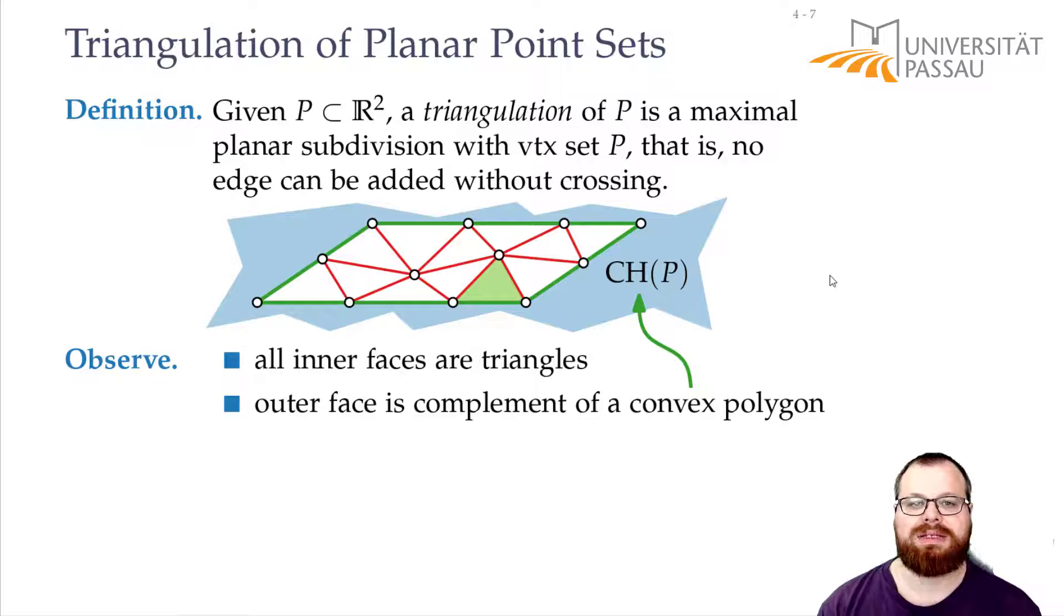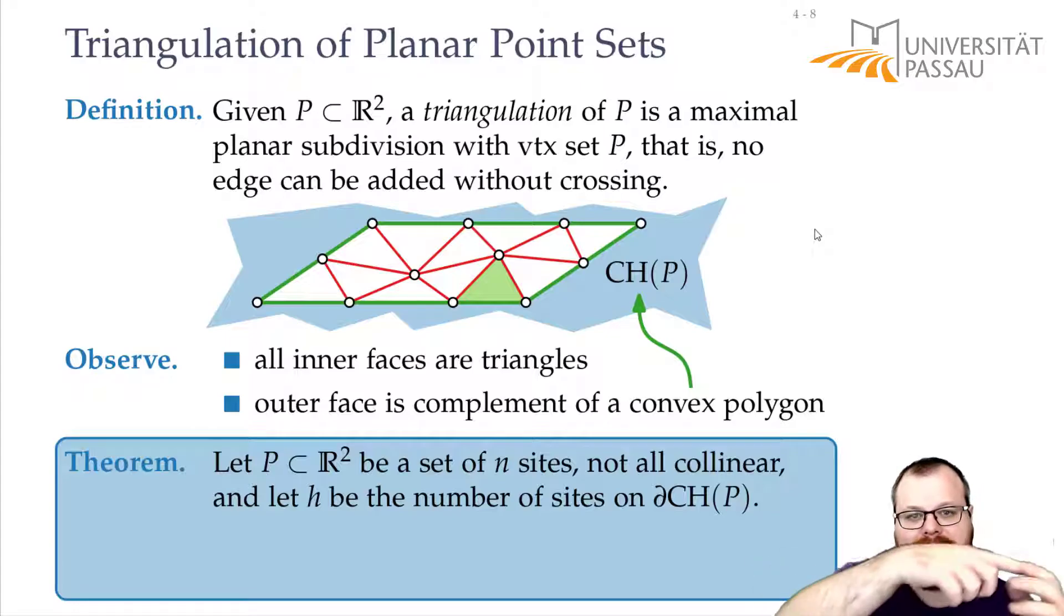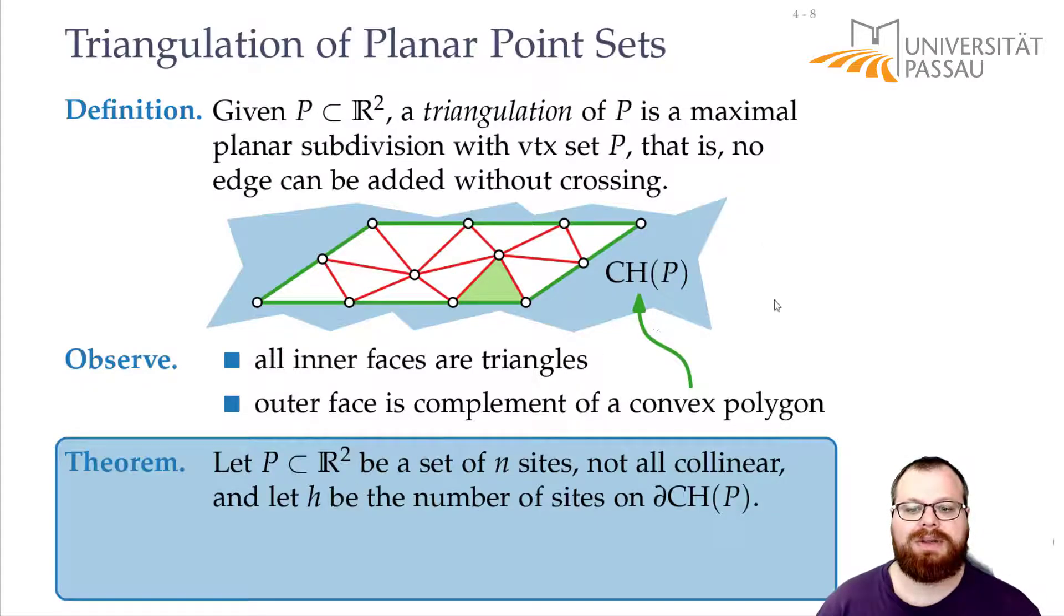So we want to find a triangulation of our point set and this leads us to our first result. Let P be a set of n sites. We call it sites again so that we don't have any confusion between input points and points in the plane, and they are not all collinear.